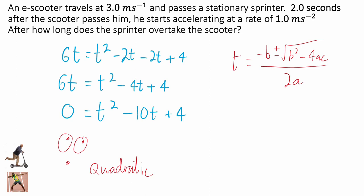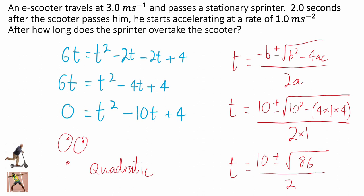So, firing all of that in, so a being 1, b being minus 10, and c being plus 4. We can put that into the quadratic equation as follows, giving us t equals 10 plus minus the square root of 86 over 2. And then we just need to simply look at both versions of the equation, the plus and the minus version.